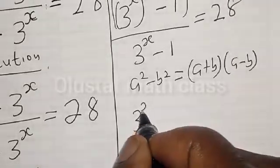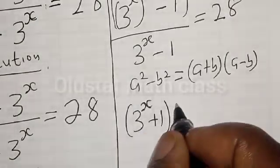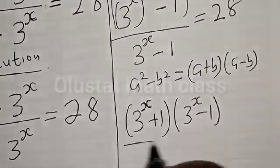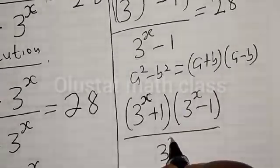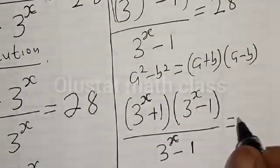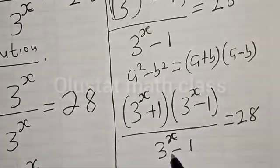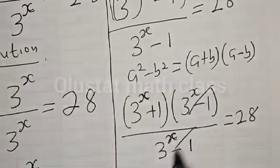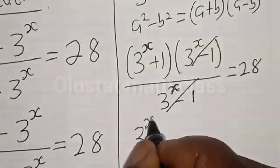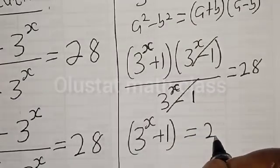So the numerator becomes 3 raised to power s plus 1, multiplied by 3 raised to power s minus 1, divided by 3 raised to power s minus 1, is equal to 28. We have 3 raised to power s minus 1 in both numerator and denominator, so they cancel, and we are left with 3 raised to power s plus 1 is equal to 28.